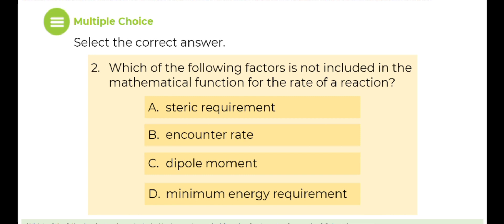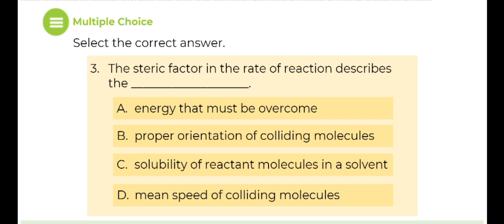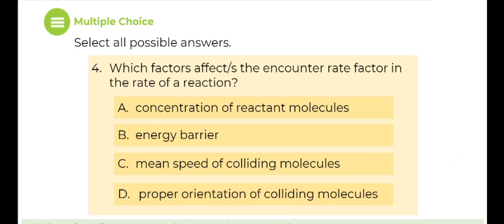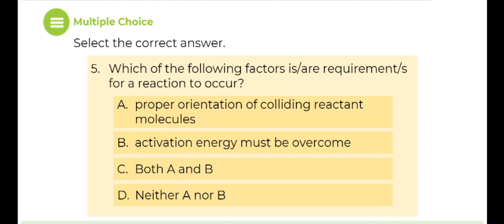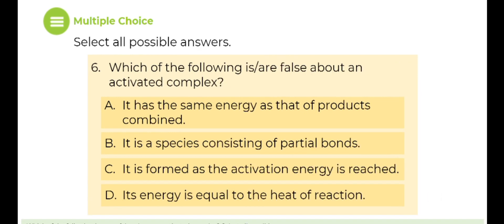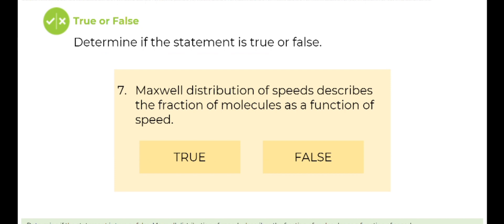Number 2: Which of the following factors is not included in the mathematical function for the rate of a reaction? Number 3: The steric factor in the rate of a reaction describes the blank. Number 4: Which factors affect the encounter rate factor in the rate of a reaction? Number 5: Which of the following factors are requirements for a reaction to occur? Number 6: Which of the following are false about an activated complex? Number 7: Determine if the statement is true or false. The Maxwell distribution of speeds describes the fraction of molecules as a function of speed.